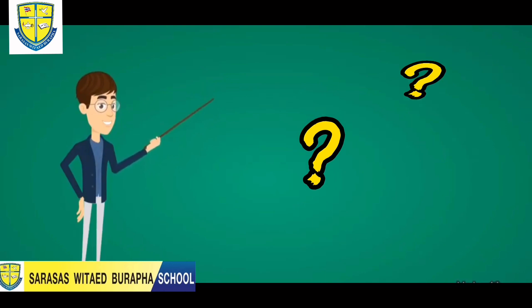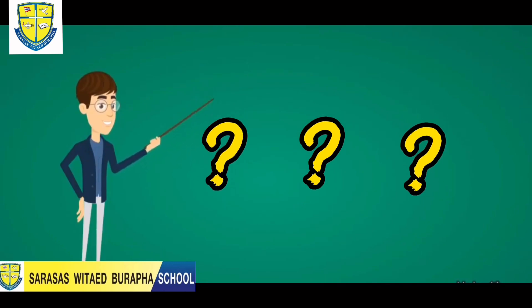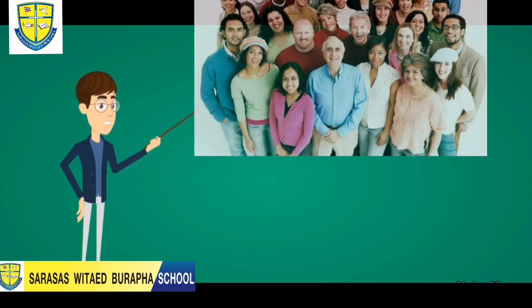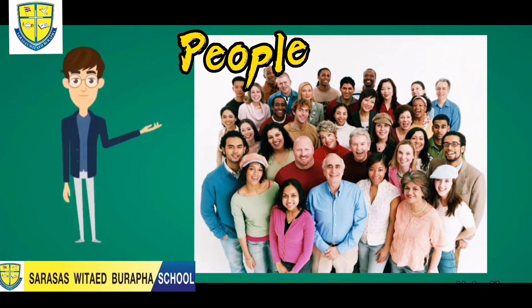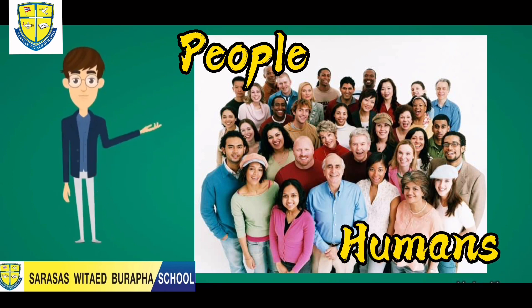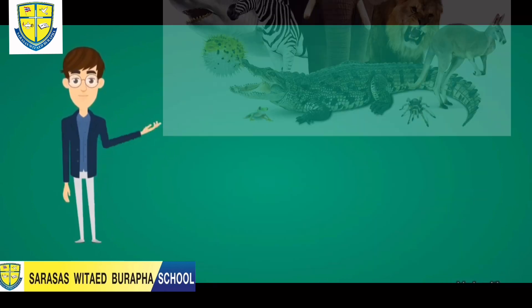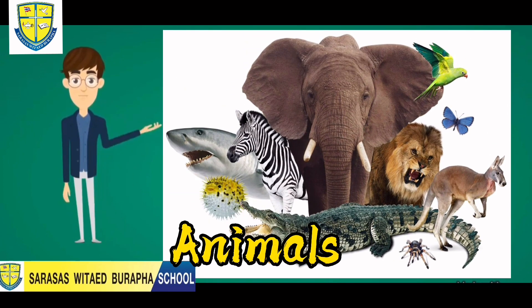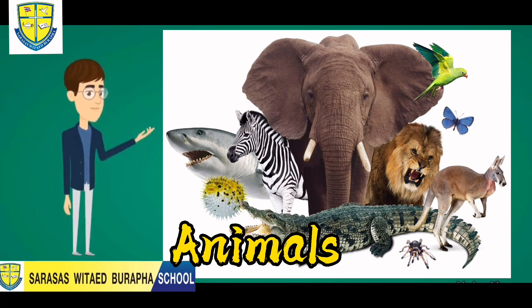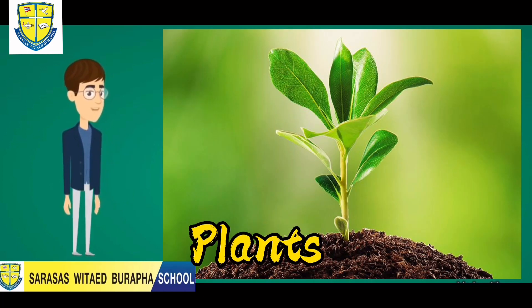Can you still identify our examples of living things? First, we have people, or we can also say humans. Next, we have animals. And last but not least, we have plants.